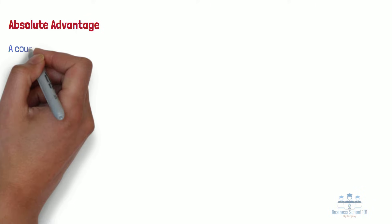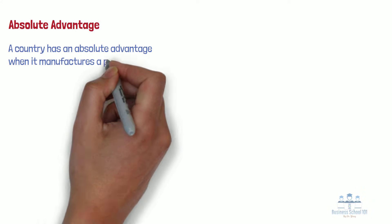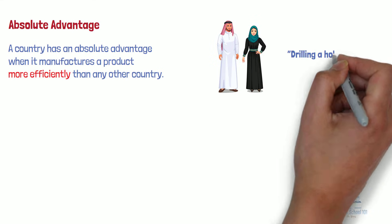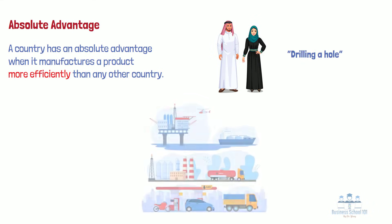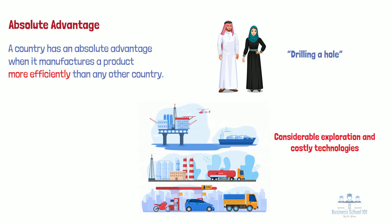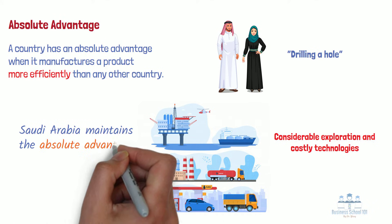By definition, a country has an absolute advantage in manufacturing a product over another country if it uses fewer resources to manufacture that product. In other words, a country has an absolute advantage when it manufactures a product more efficiently than any other country. For example, extracting oil in Saudi Arabia is basically just a matter of drilling a hole. In contrast, striking oil in other countries could involve considerable exploration and costly technologies for drilling and extraction. Therefore, Saudi Arabia requires less resources than other countries to produce the same amount of oil, and we can say that Saudi Arabia maintains the absolute advantage in oil production.